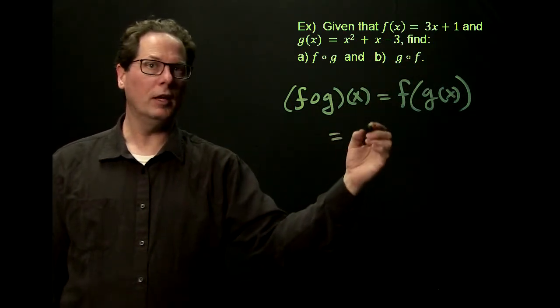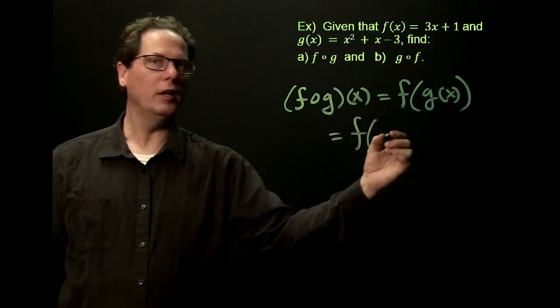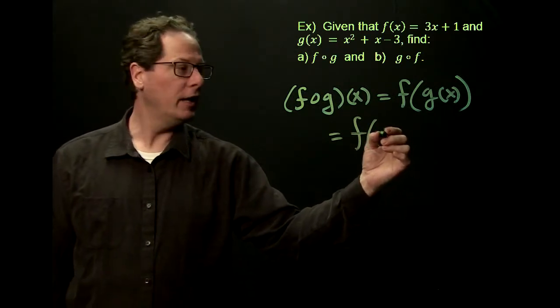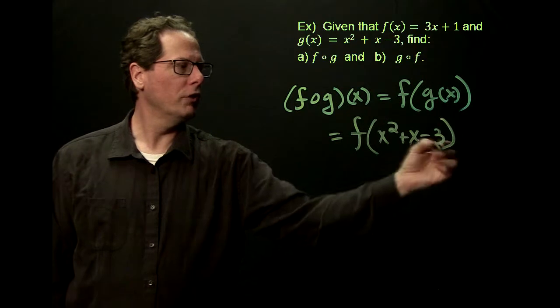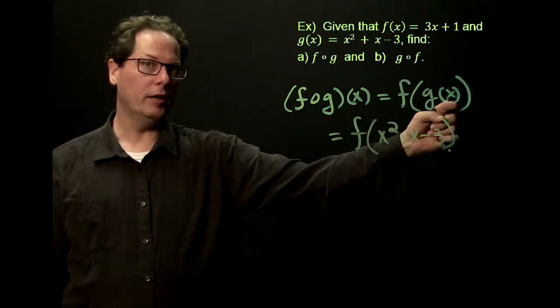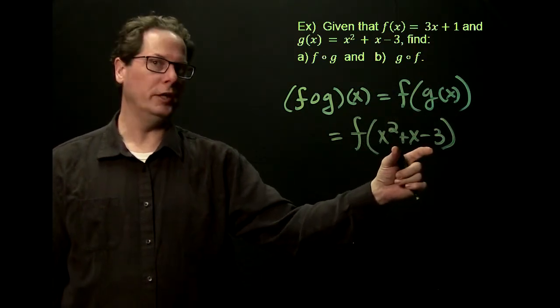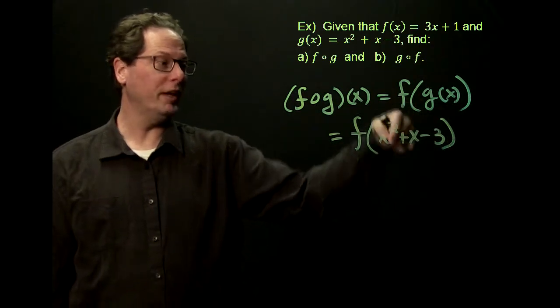So what that looks like in this case, well let's just see what g does to x. G takes x and it squares a number, it adds x and it subtracts 3. So g would take x to this new object x squared plus x minus 3.